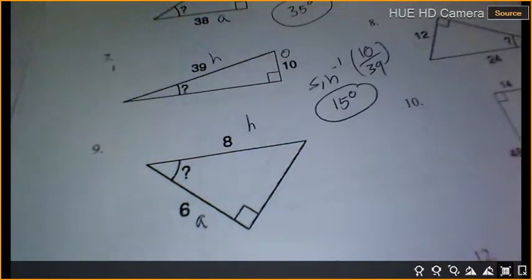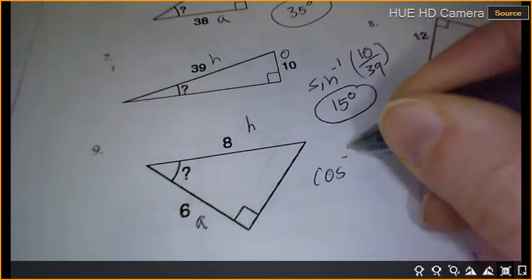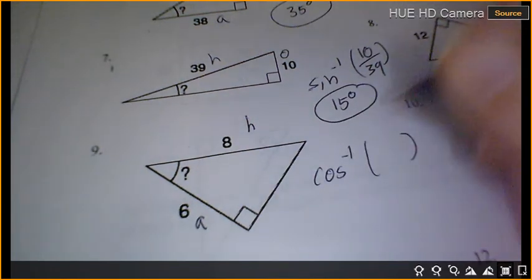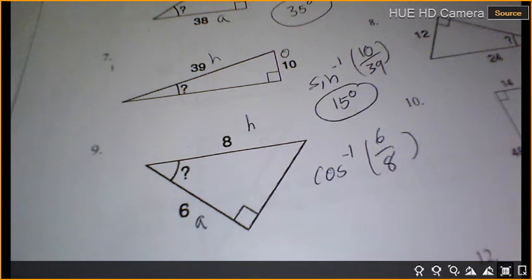So which trig function do I use? Cosine negative 1 equals adjacent over hypotenuse. Trig function, cosine negative 1, 6 divided by 8. And I get 41 degrees.